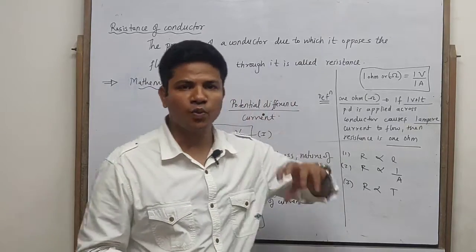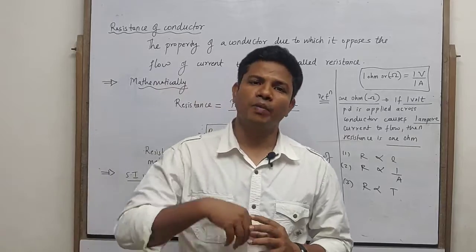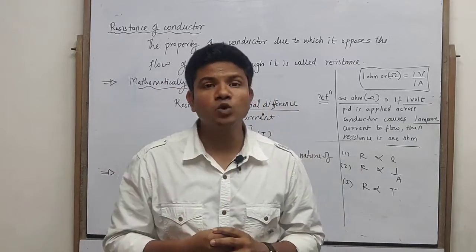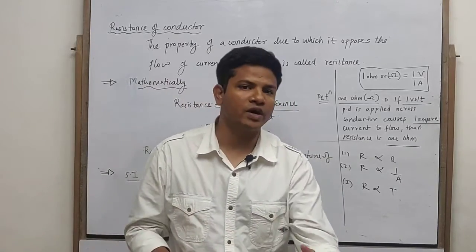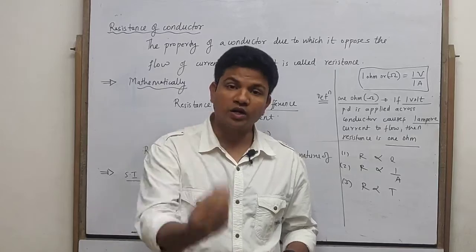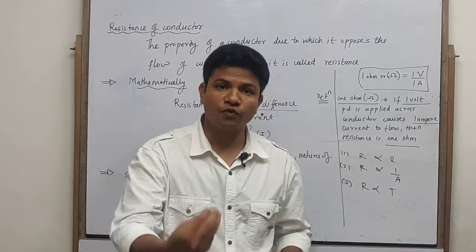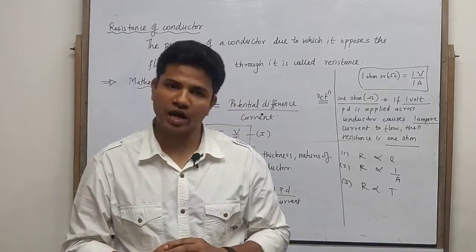The property of the conductor by which it opposes the flow of current is called resistance of the conductor.